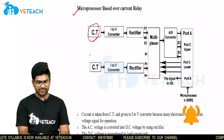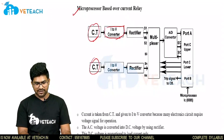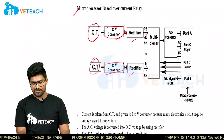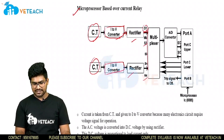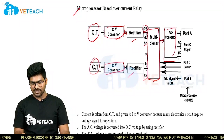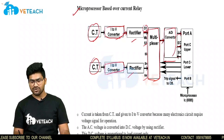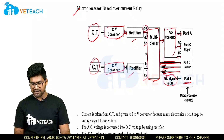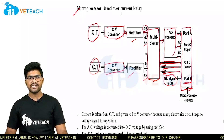Here from two CTs we have taken CT1 and CT2. From there I have an I to V converter, and here also an I to V converter. This voltage is given to a rectifier in both cases, and from here we are getting IDC S1, IDC S2, and IDC. This is given to a multiplexer, which is then connected to an A to D converter at port A. E by C, S by C, upper port C, and from port C lower we are again feeding back to the multiplexer. Port B will give the trip signal to the circuit breaker. This entire part is the microprocessor, which is IC 8085.